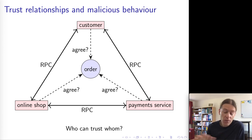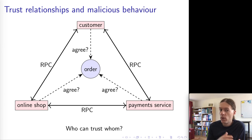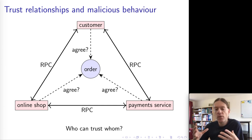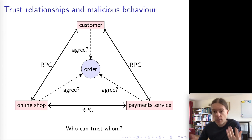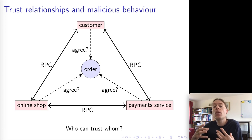The trust relationships in real life get quite complicated, with asymmetric trust between parties — perhaps the shop trusts the payment service but not vice versa. One party does not trust another, yet they still need to get something done. In that sense, Byzantine behavior is real and practical. The Byzantine generals problem is a simplification — it treats all generals as symmetric — but it is a useful starting point for studying situations in which participants don't fully trust each other.